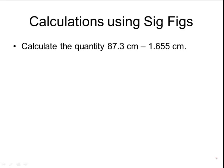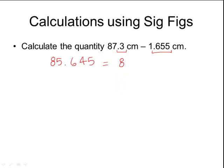For example, calculate 87.3 minus 1.655. The calculator gives 85.645, but now express that with the proper number of significant figures. Since this is subtraction, only pay attention to decimal places. The first measurement has one decimal place; the second has three. Use the measurement with the fewest decimal places — one decimal place — so the final answer is 85.6 centimeters.